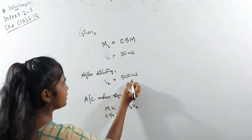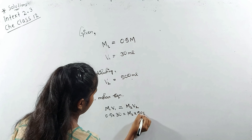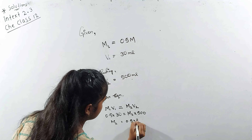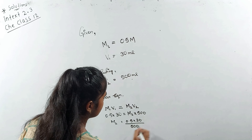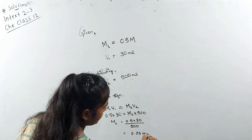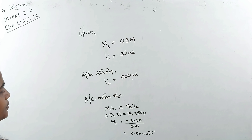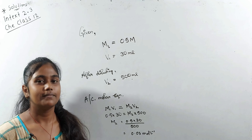After dilution, water has been added, so the volume changes from 30 mL to V₂ = 500 mL. We need to find M₂, the new molarity after dilution. According to the dilution equation, M₁V₁ = M₂V₂. Putting in values: 0.5 × 30 = M₂ × 500. So M₂ = (0.5 × 30) / 500, which equals 0.03 mol per liter.